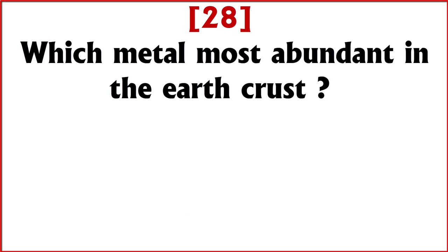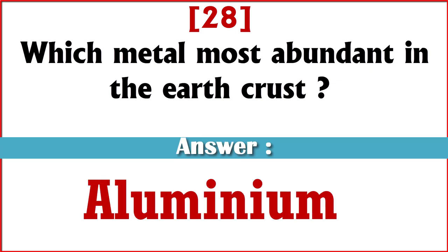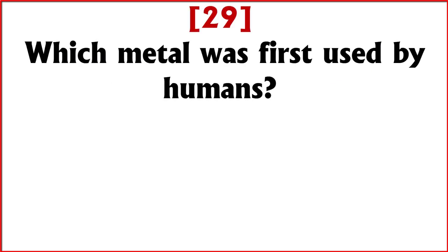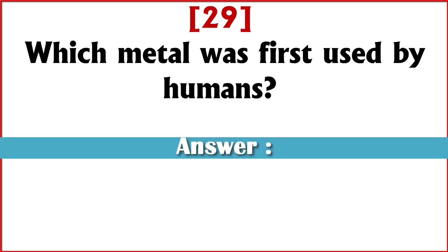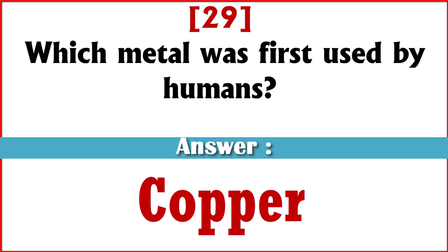Which metal is most abundant in the Earth's crust? Answer: Aluminium. Which metal was first used by humans? Answer: Copper.